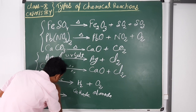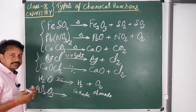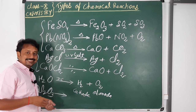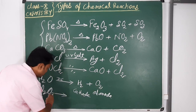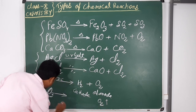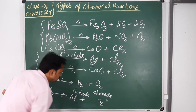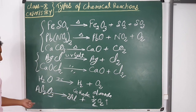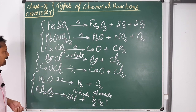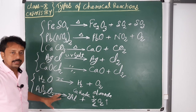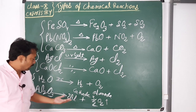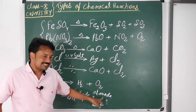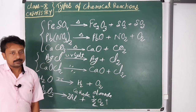Another example is aluminium oxide — when we pass DC electric current through it, it dissociates and at the electrodes, electrons are accepted and lost, forming stable products. At the anode, oxygen gas is released, and aluminium is deposited at the cathode. This is an example of electrical decomposition reaction because the decomposition is due to the flow of electric current.